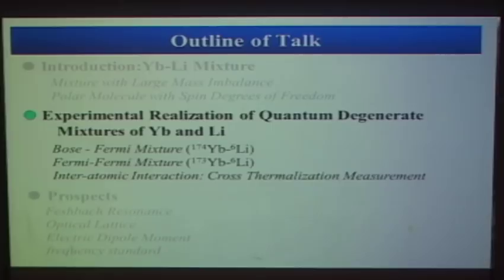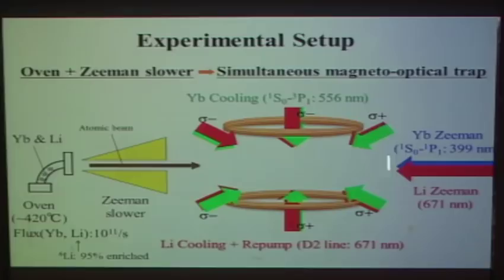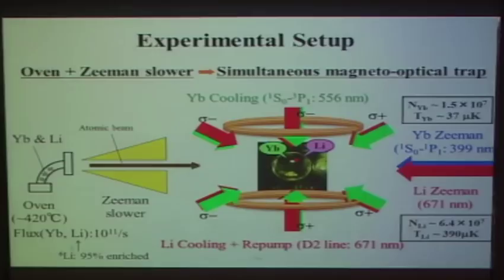Now let me describe in detail our recent experiment realizing the quantum degenerate mixture of Ytterbium and Lithium. Our experiment starts from Zeeman slowing of both Ytterbium and Lithium atomic beams from the same oven. Zeeman-slowed atoms are captured by a bichromatic magneto-optical trap. Especially for Ytterbium, the MOT is operated on the weak intercombination transition, which gives a lower Doppler cooling limit. With this setup we could successfully trap both species in the MOT, and the temperature of Ytterbium is lower than Lithium due to the lower Doppler cooling limit.